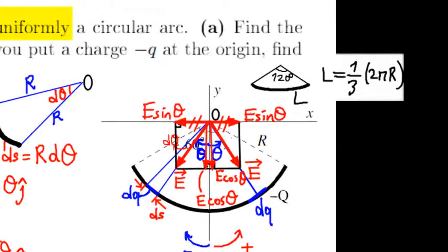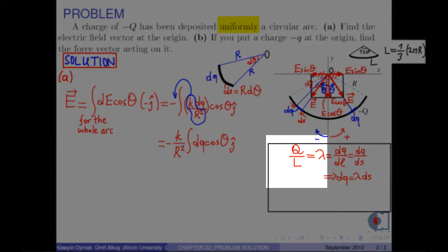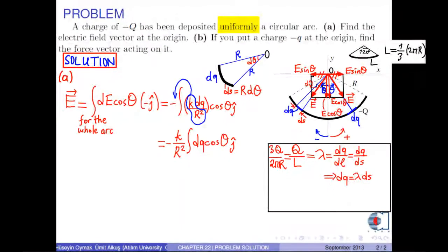According to the figure, a circular arc length L is calculated by the formula one-third two pi r, where two pi r is the circumference of a circular radius r. Therefore, λ can be written as 3q over 2 pi r. So, dq becomes 3q over 2 pi r times ds.